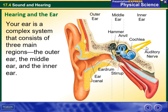Your ear is a complex system that consists of three main regions: the outer ear, the middle ear, and the inner ear, as you can see here in the diagram.